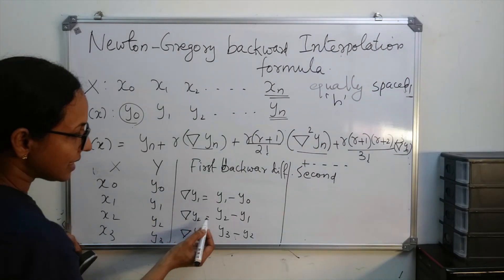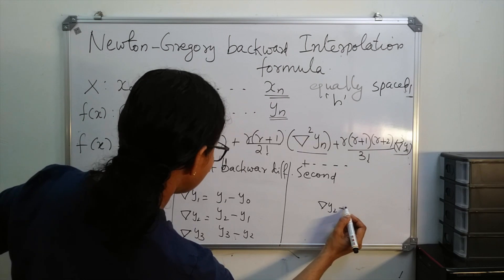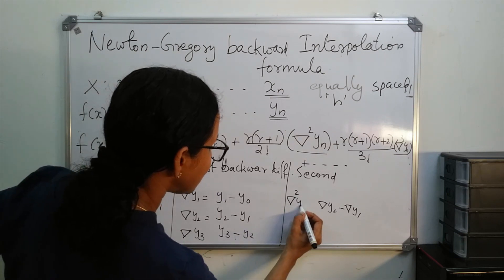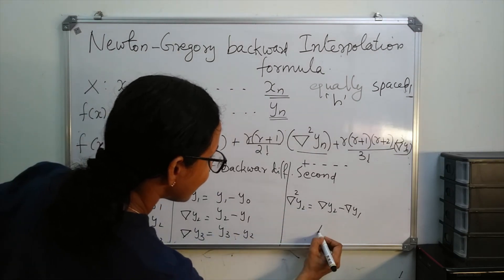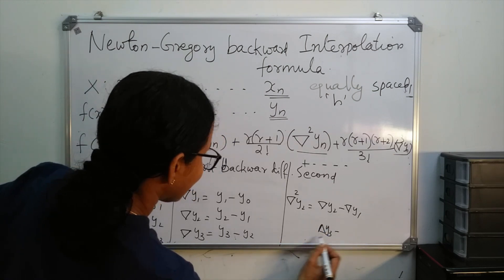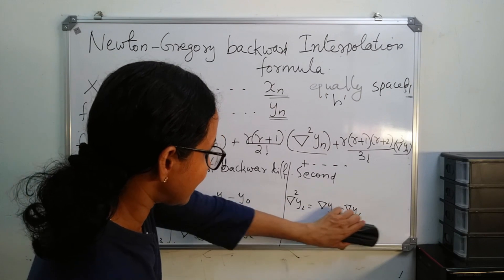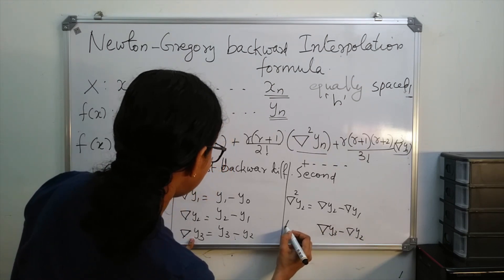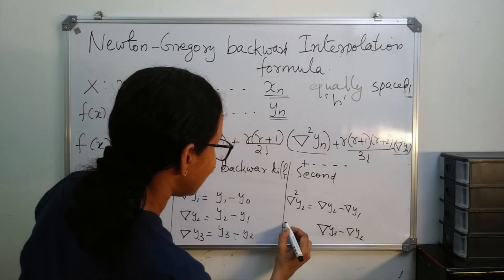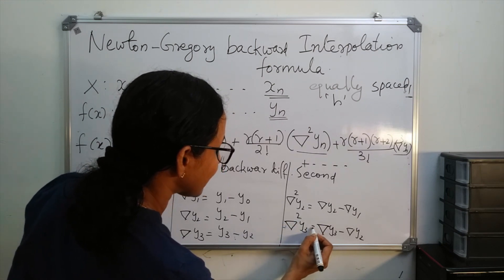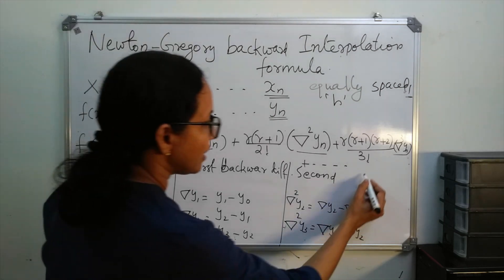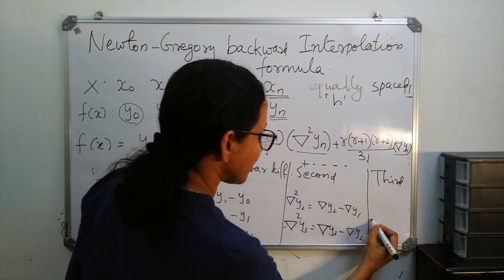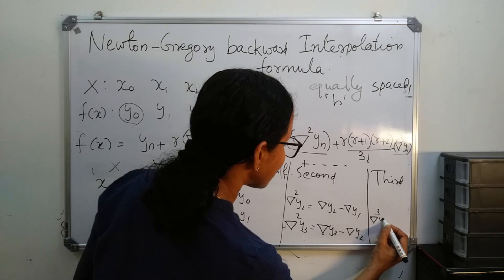So backward delta y2 minus backward delta y1 is denoted by backward delta squared y2. And backward delta y3 minus backward delta y2 is denoted by backward delta squared y3. These are the second backward differences. The third backward differences are differences of these, written as backward delta cubed y3, which equals backward delta squared y3 minus backward delta squared y2.